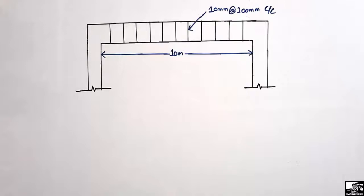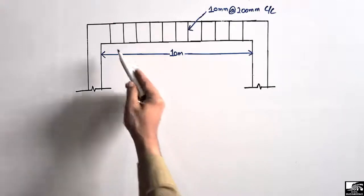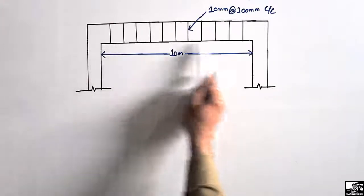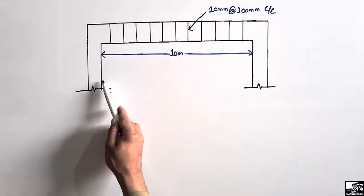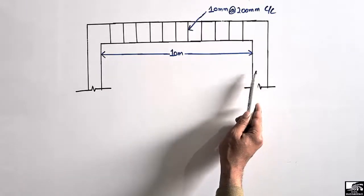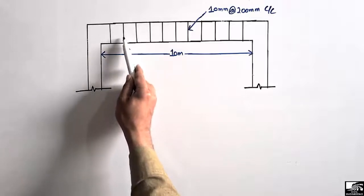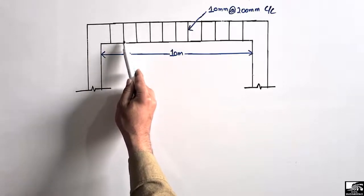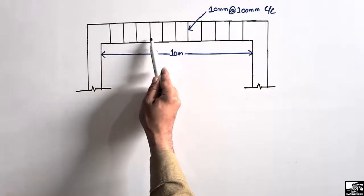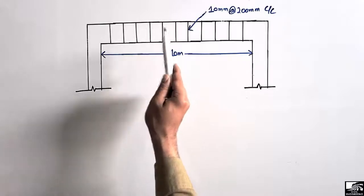Hello guys, welcome back to E7 Engineering YouTube channel. Please subscribe to our channel for today's engineering videos. Today's lecture, we are going to find out the number of stirrups in a beam. This beam is supported by two vertical members known as columns, and these stirrups — we can call it transverse reinforcement — are provided in a beam in order to resist shear stresses.